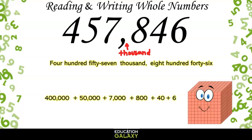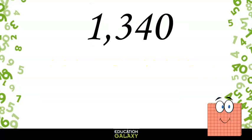We get 400,000 plus 50,000 plus 7,000 plus 800 plus 40 plus 6. Let's check out this number, 1,340.